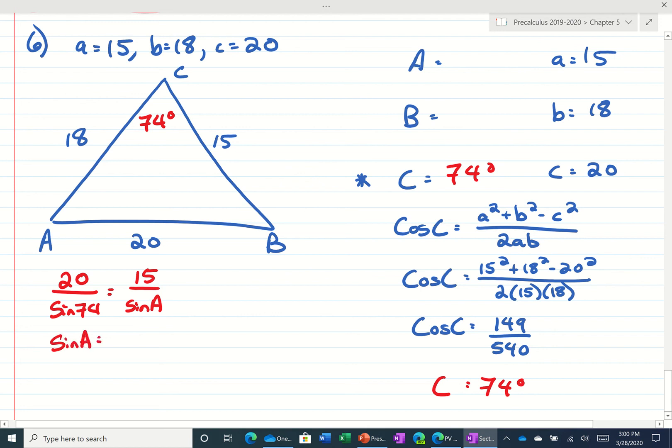So if we cross multiply and divide, this is going to be 0.7209, whatever. And if we take the inverse sine of both sides, this is 46.1 degrees.